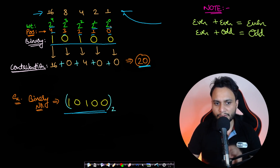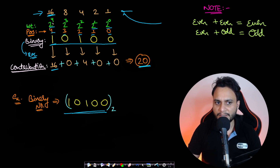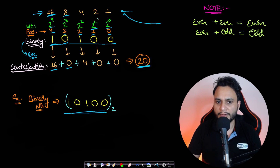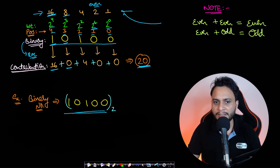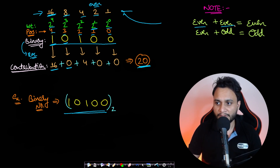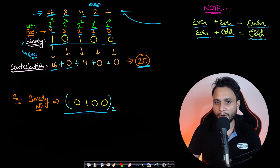To convert a binary number to decimal, you multiply the weight of each position by its binary value. For example, the weight 16 contributes 16 if the bit is 1, and weight 8 contributes 0 if the bit is 0. Now, notice that all powers of 2 greater than or equal to 1 are always even. If you add even numbers together, the result is always even — but if you add an odd number to an even number, the result is always odd.